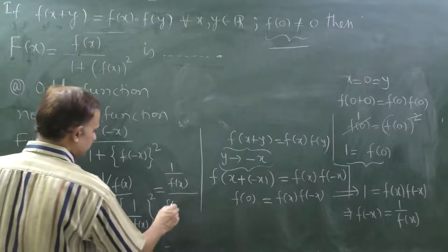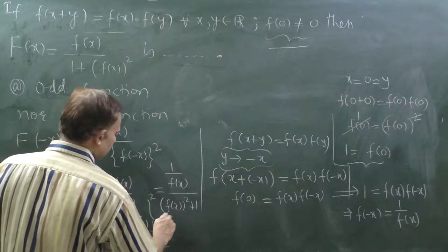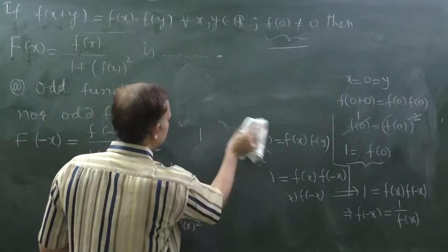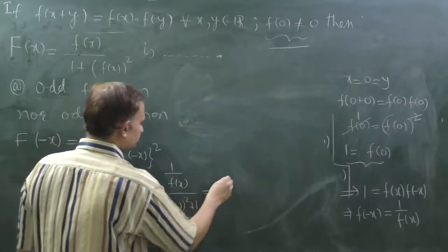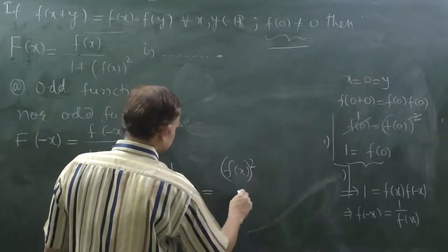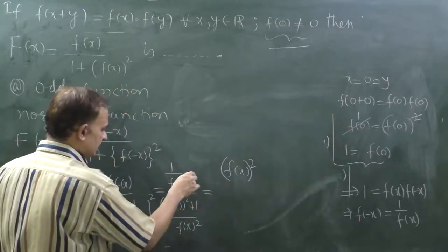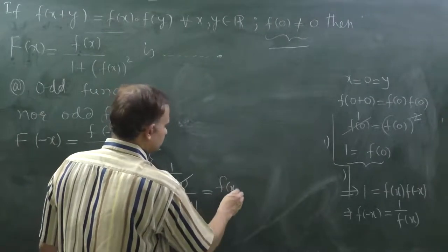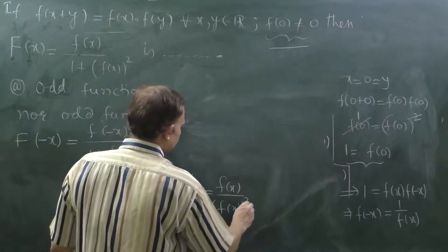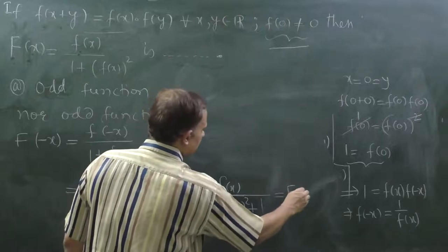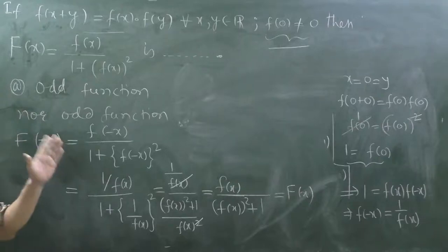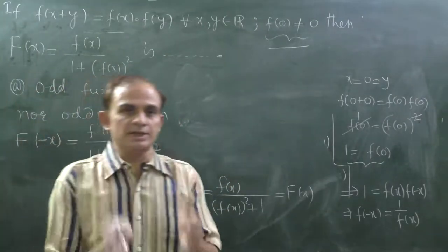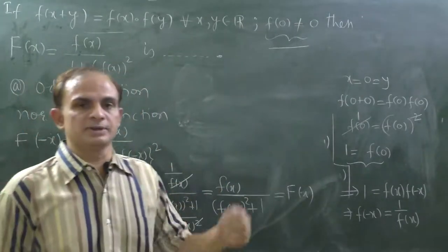Taking the LCM and simplifying: we bring f(x) whole squared to the numerator. Cancelling f(x) terms directly, we find that F(-x) = f(x)² + 1, which equals F(x). Since F(-x) = F(x), the function is an even function.